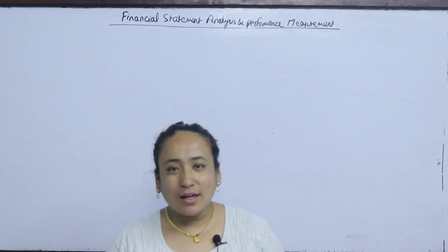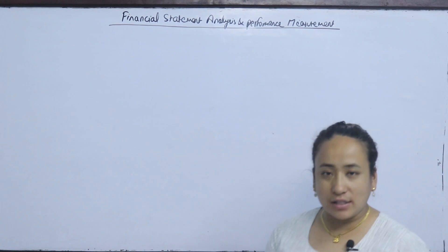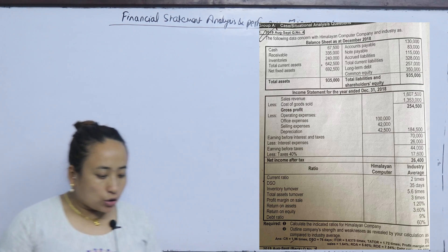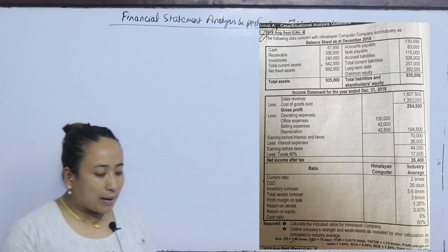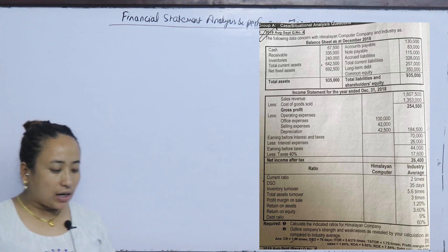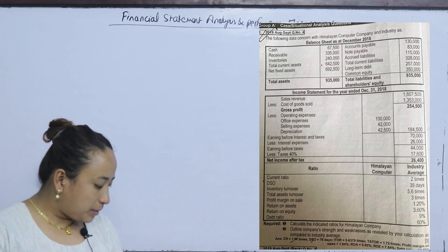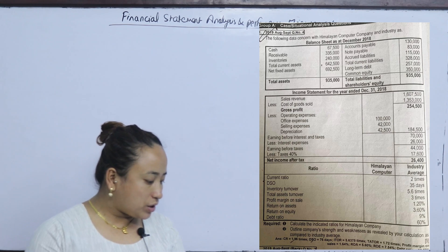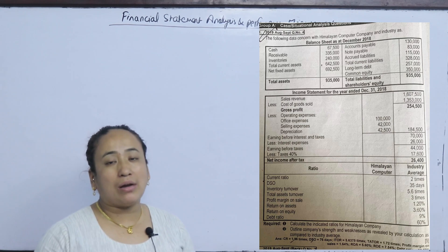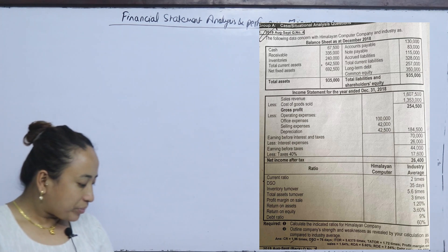Namaskar. In today's class, we will solve a numerical ratio analysis. The following data is concerned with the Himalayan Computer Company and industry as well — balance sheet and income statement. We will solve the ratios of the Himalayan Computer Company. The industry average is the value used for decision making.